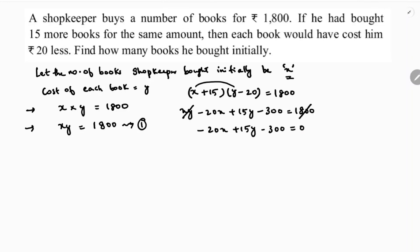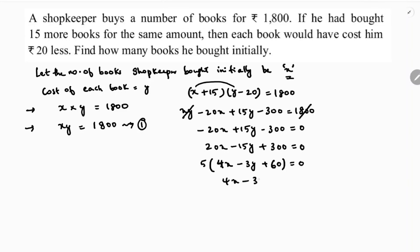Using equation one, xy = 1800, we cancel both sides. This gives us -20x + 15y - 300 = 0. Taking 5 common and rearranging: 4x - 3y + 60 = 0. This is equation two.